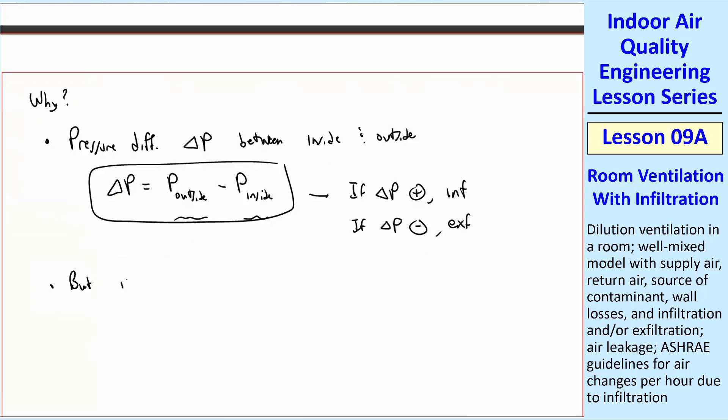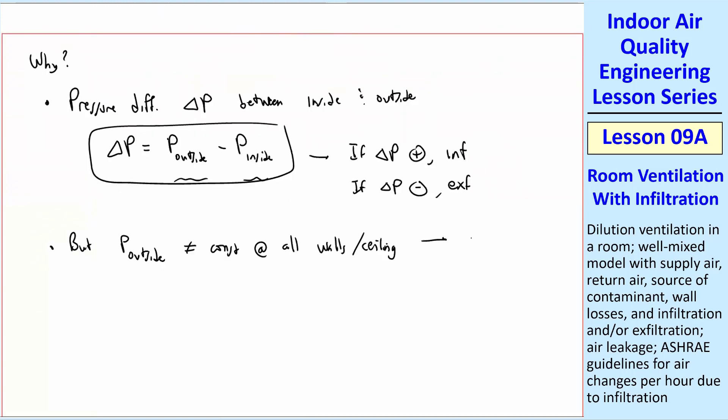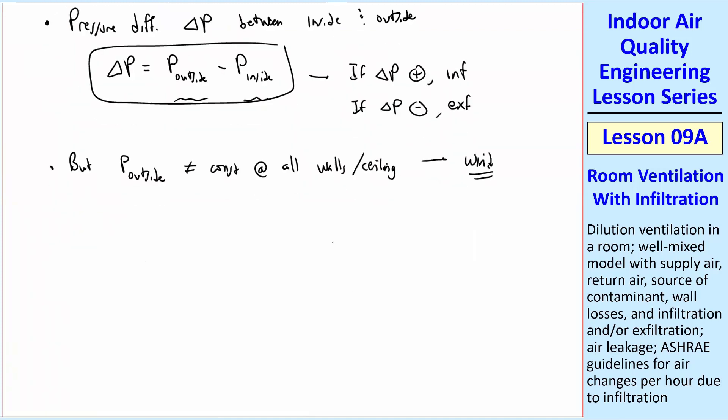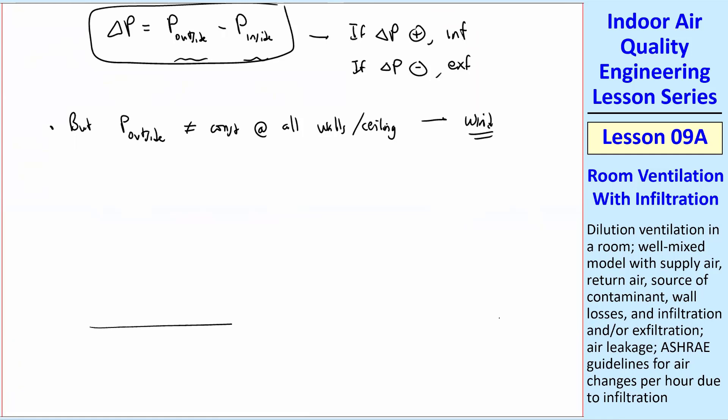There's a problem, though. P outside does not equal a constant at all walls and ceiling. Why is that? Because of wind. Wind will be a big factor in this. So we get a little bit of fluid mechanics here. This is the ground and here's a building, your house, and we have some wind view.